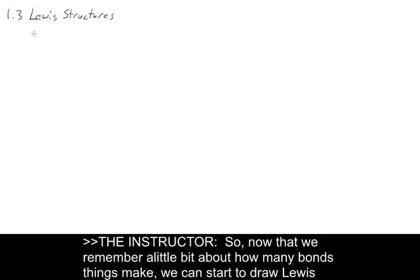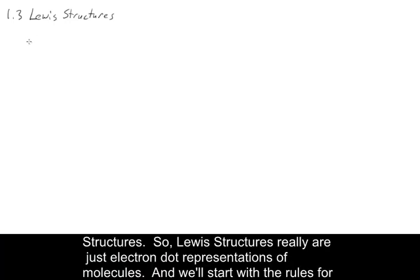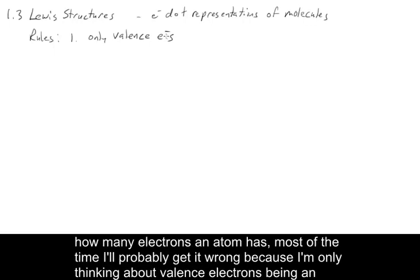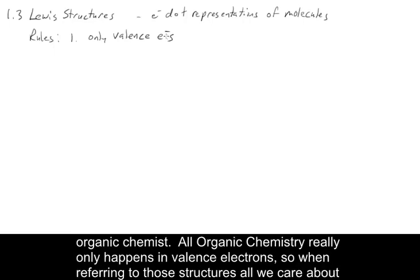Now that we remember a little bit about how many bonds things make, we can start to draw Lewis structures. Lewis structures are just electron dot representations of molecules. We'll start with the rules for Lewis structures. First, we're only going to use valence electrons. All organic chemistry really only happens with valence electrons, so when we're drawing Lewis structures, all we care about are the valence electrons.